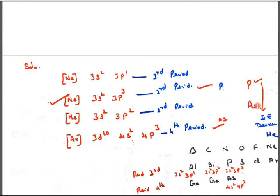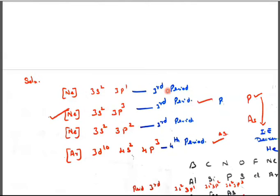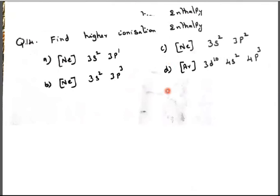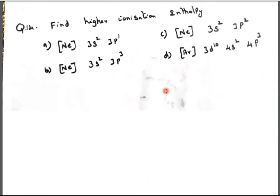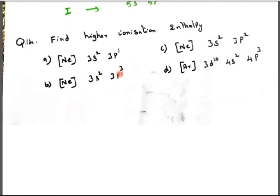So phosphorus will have higher ionization energy. Arsenic will have a lower ionization energy. So this is the thing, phosphorus. So this is the answer: 3s² 3p³.